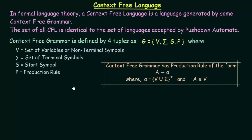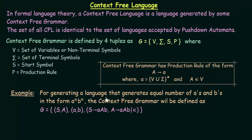Let us take a simple example to understand this better. We want to generate a language that produces equal numbers of A's and B's in the form a^n b^n. We have taken this example before when discussing regular languages, and we already saw that a language generating strings of the form a^n b^n — where the number of A's must be exactly equal to the number of B's — is not a regular language, because it cannot be designed using a finite state machine. So we are now studying context free languages, which are a higher level and can generate strings of this form.